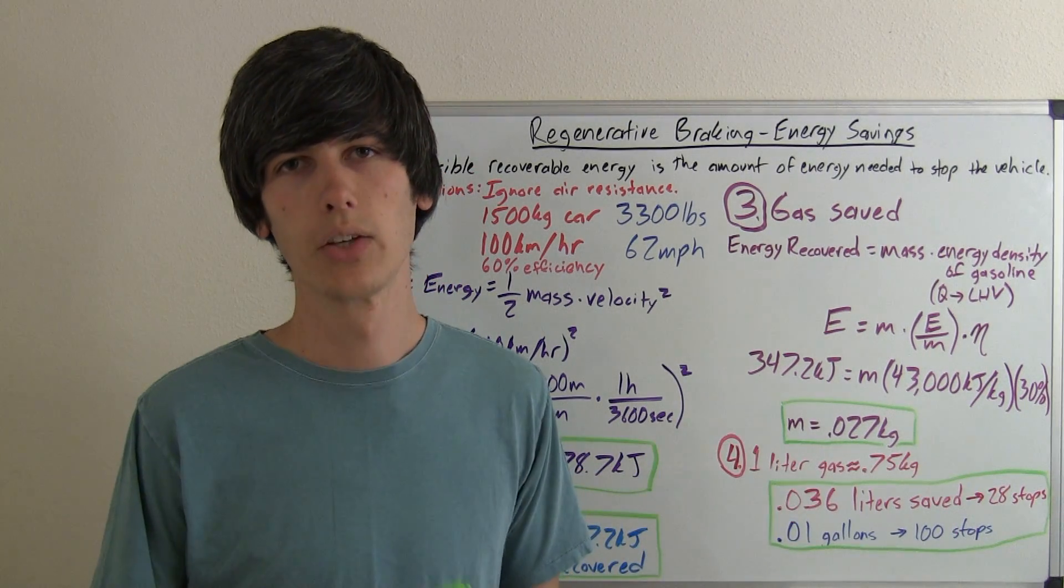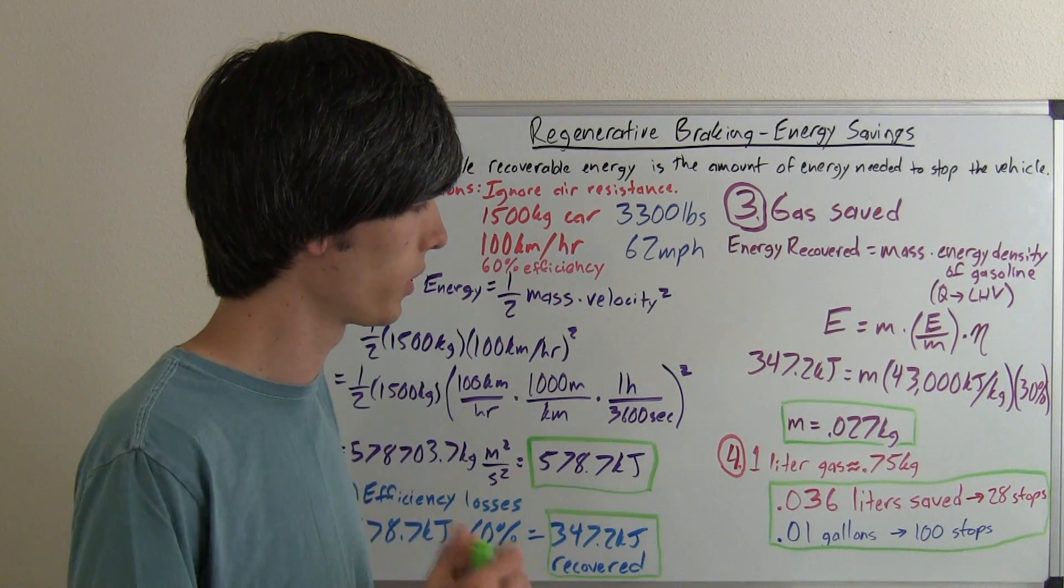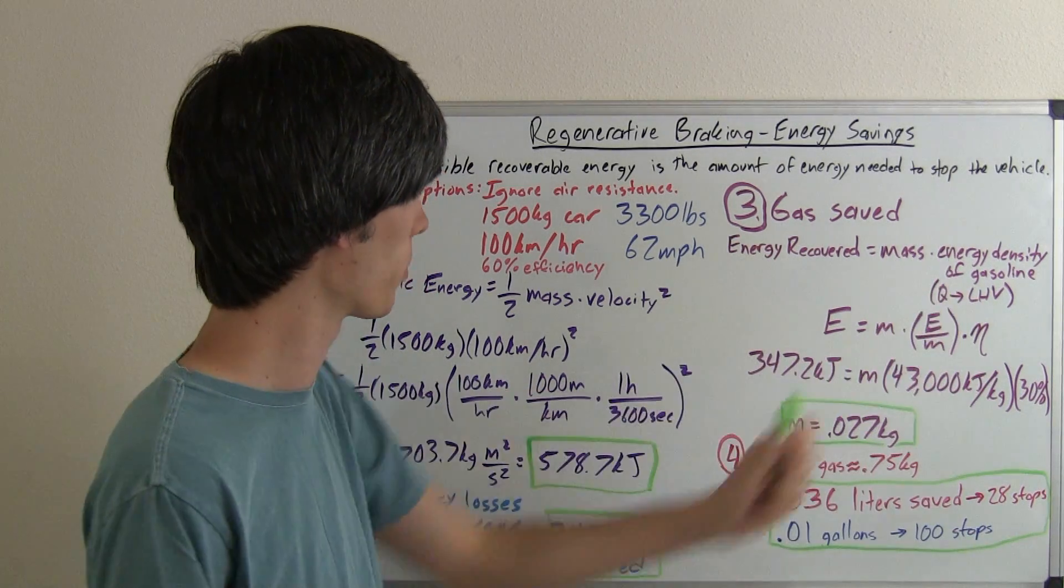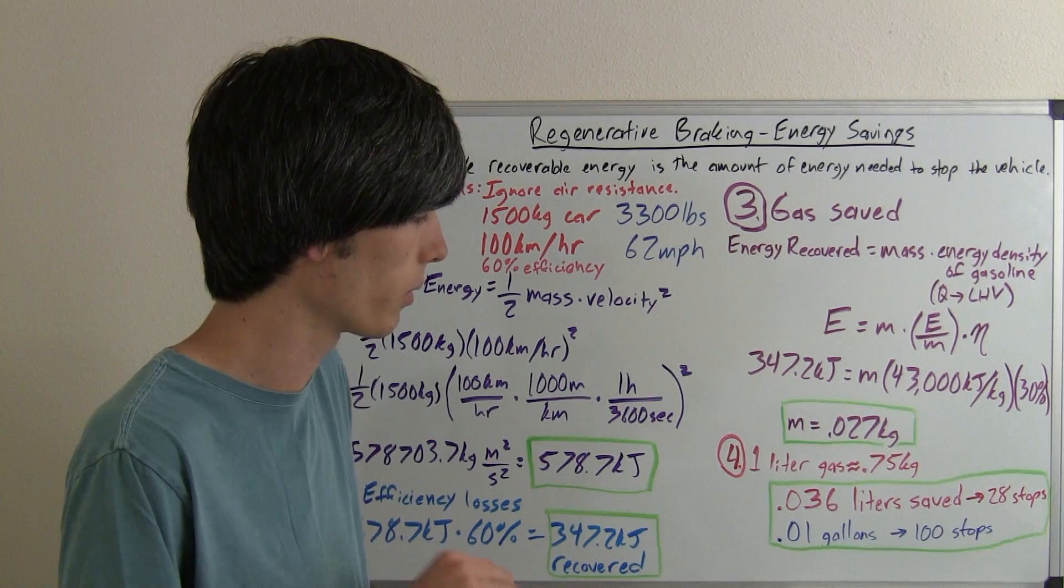So if you stop 28 times, you'll save one liter of gas, assuming you've got this hybrid vehicle with 30% efficiency and a 60% efficient recovery rate.